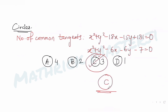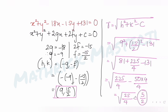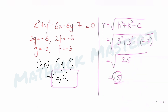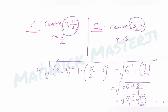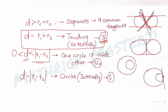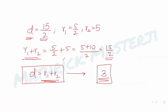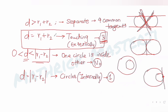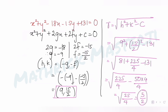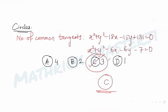I hope you have understood how to solve this type of question. From the first equation we found the center and radius of Circle 1. From the second equation we found the center and radius of Circle 2. We then calculated the distance between the centers, compared it to the sum of the radii, and since they are equal the circles touch externally — giving 3 common tangents, which is option C.